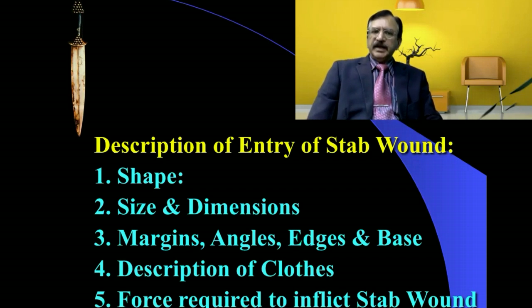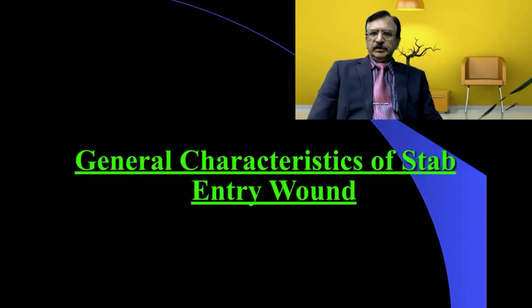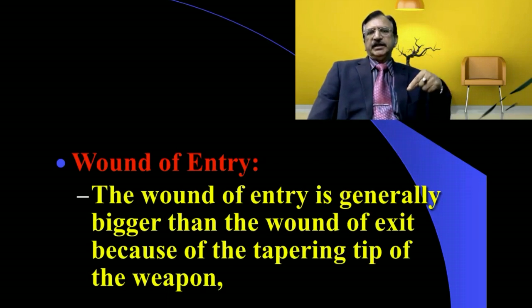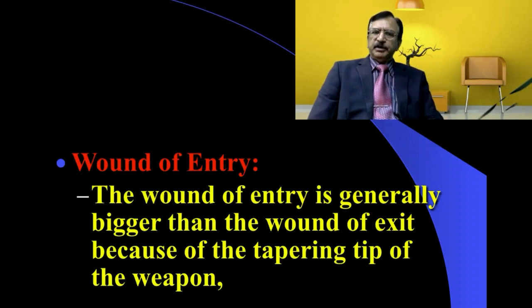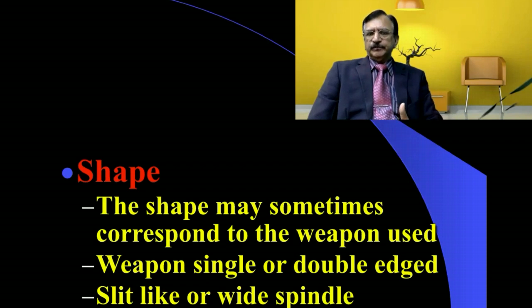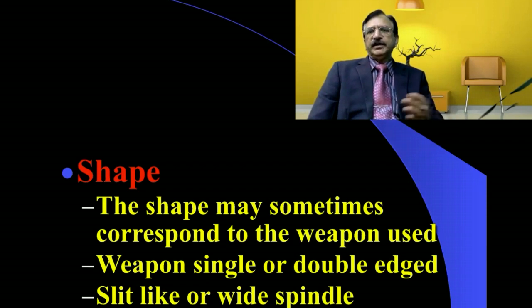We also get an idea of the force which has been inflicted in causing the stab wound. Regarding the general characteristics of the stab entry wound: the wound of entry is generally bigger than the wound of exit because of the tapering tip of the weapon — as the tip enters, the blade becomes broader. The shape sometimes corresponds to the weapon used, for example whether the weapon is single or double-edged, producing a slit-like or wide spindle shape.